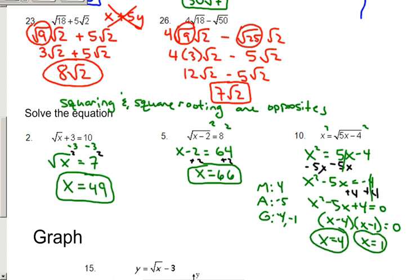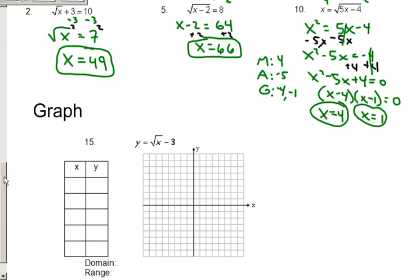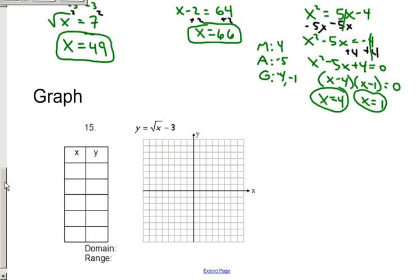Got to be careful. If you solve these and you get a negative number, it can't work because you cannot square root a negative. Two numbers will never multiply to each other to make a negative. So if you get to a situation where you have x equals a negative number, you know that it's got to be crossed off.